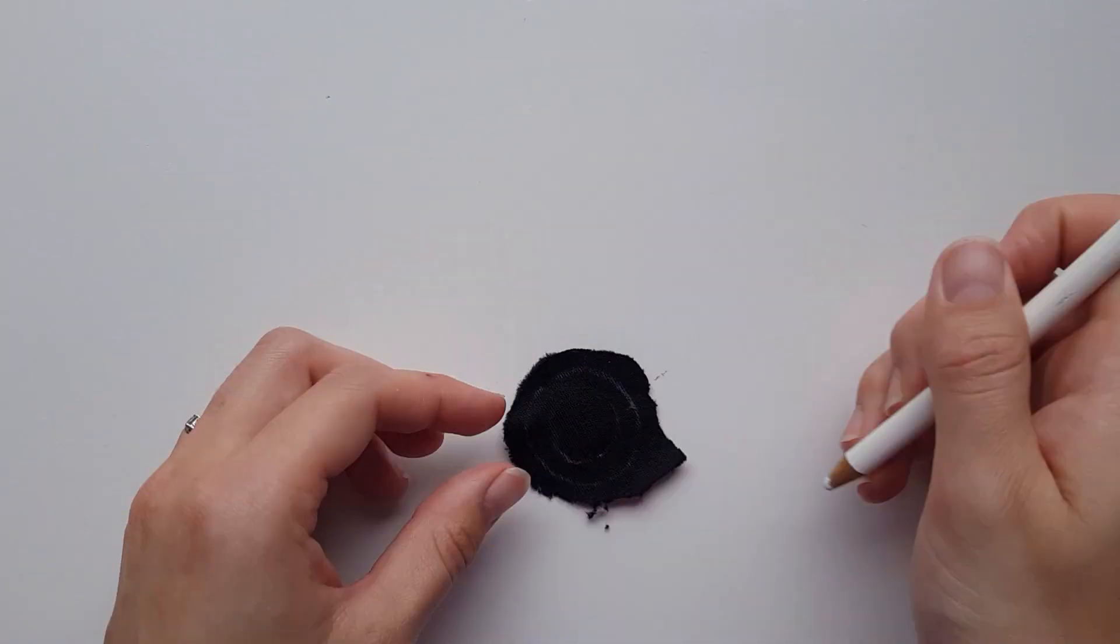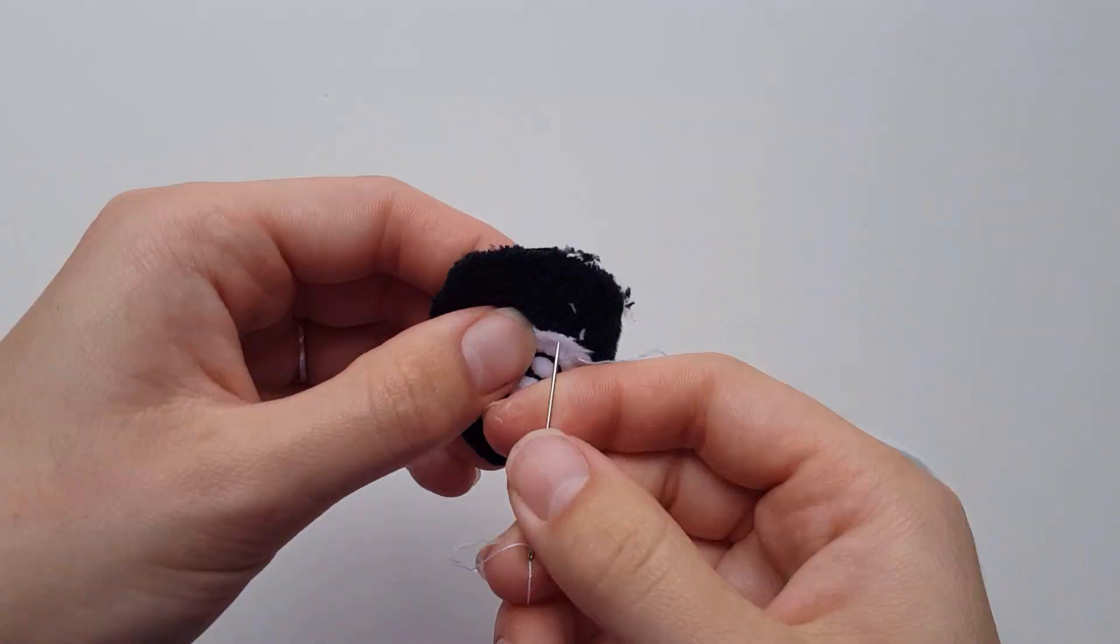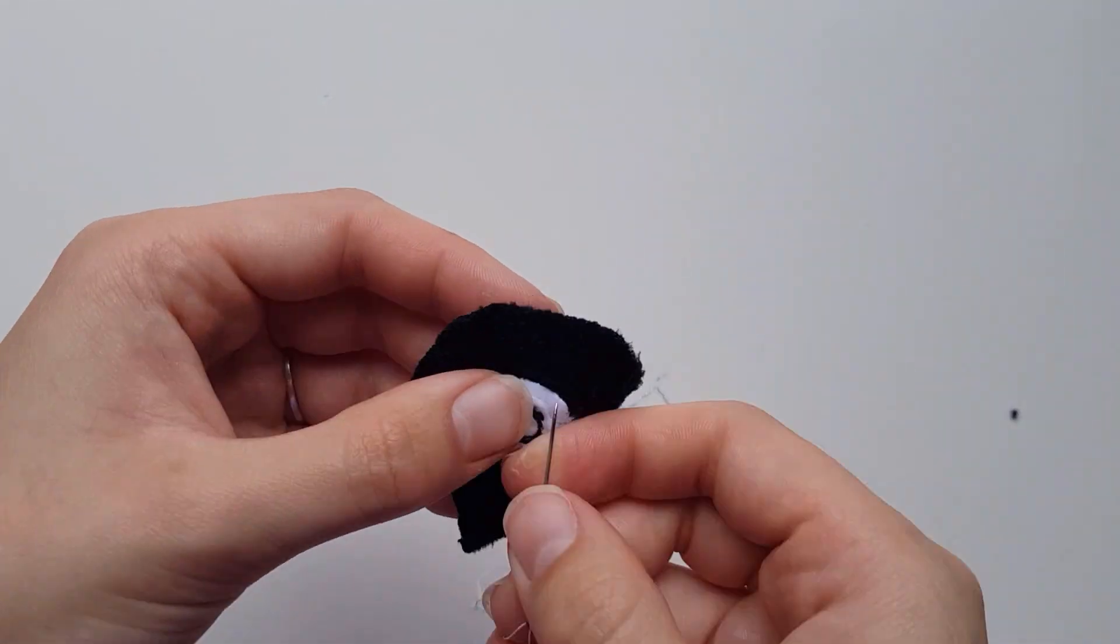On the black circle, use a template to draw a circle guideline on the tracing side, then flip over to the finished side and use this as a guideline to sew the button piece to the center.